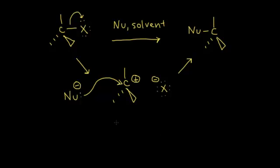We have a carbocation in our mechanism, so rearrangements are possible. You have to be very careful when thinking about SN1 reactions. In terms of the rate of the overall reaction, the first step — the dissociation of your halogen — is the slow step. This process is very slow. The second step, the nucleophilic attack, is very fast.